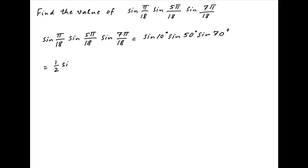Multiplying and dividing by 2, this can be written as half of sine 10 degrees times, in brackets, 2 times sine of 70 degrees times sine 50 degrees.